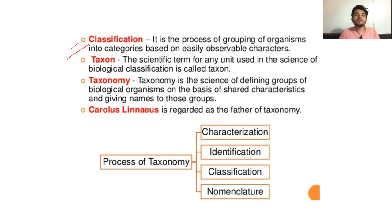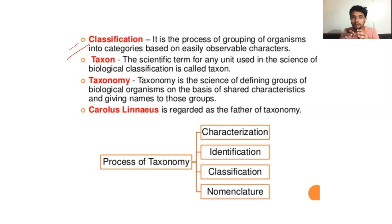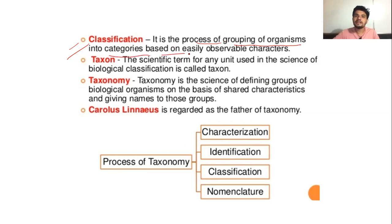Just as we go to libraries where thousands of books are present — those books are basically classified into certain groups, so that whenever we want to read a certain type of book, we go to the particular shelf and take that book. Similarly, organisms or species on this earth are also classified into certain groups. That process is very important and is known as classification. Classification is a process of grouping organisms into categories based on easily observable characters.